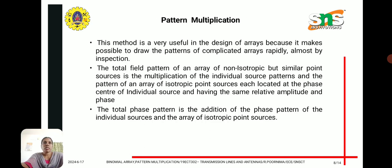Next, we discuss pattern multiplication. This method is very useful in the design of arrays because it makes it possible to draw patterns of complicated arrays rapidly, almost by inspection. The total field pattern of an array of non-isotropic but similar point sources is the multiplication of the individual source patterns and the pattern of an array of isotropic point sources, each located at the phase center of the individual source and having the same relative amplitude and phase. The total phase pattern is the addition of the phase patterns of the individual sources.